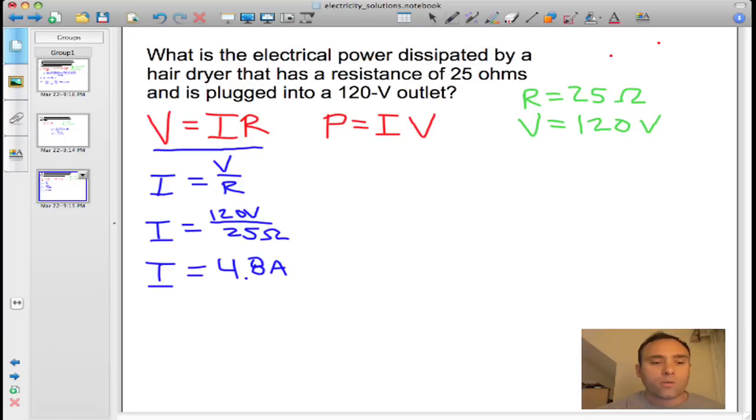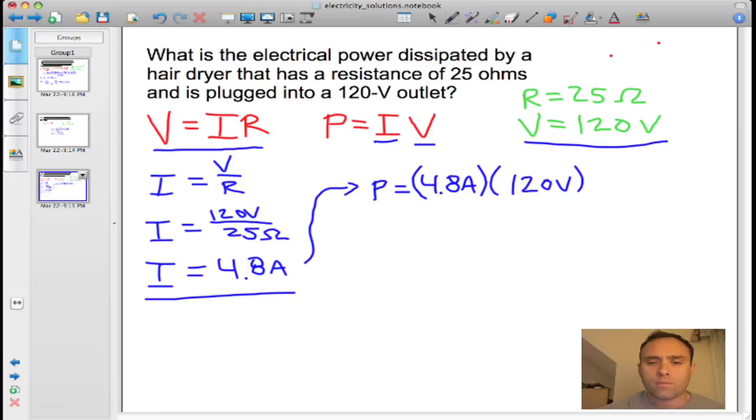So now we have this I, and we have the voltage up here from the original given information, and we can solve for the power, which is simply I times V. So we take this and move this up here. The power is equal to the current, which is 4.8 amps, times the voltage, which is 120 volts. Doing that calculation, you get 576 watts.